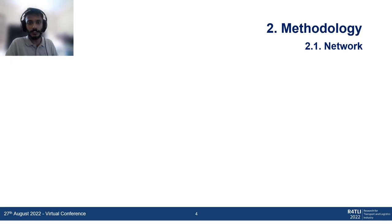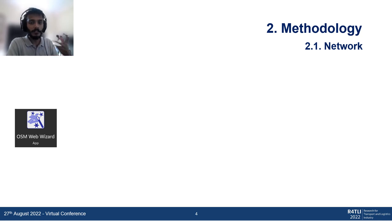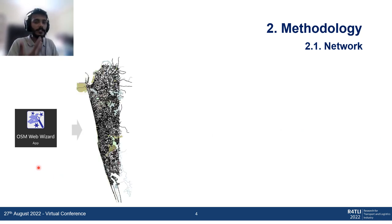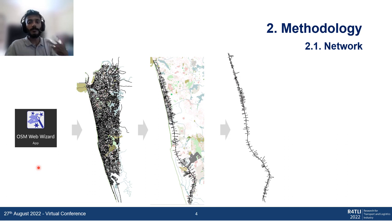The methodology is as follows. First we have to build a network and also define the traffic demand in order to make a simulation. For the network side, we use a tool available with the SUMO microscopic traffic simulation installation called OSM Web Wizard. Using that tool, after selecting a certain portion of the map, you can select the required area that we want to simulate.